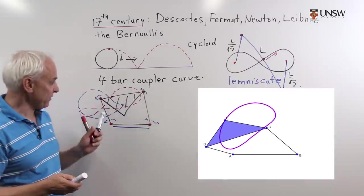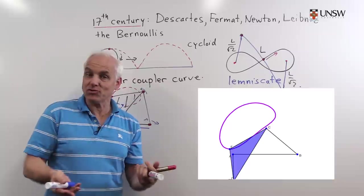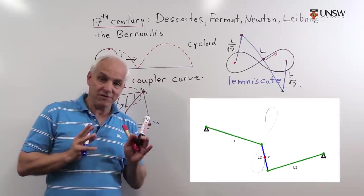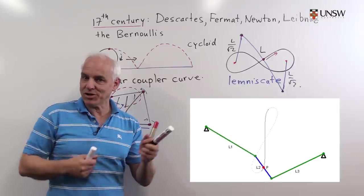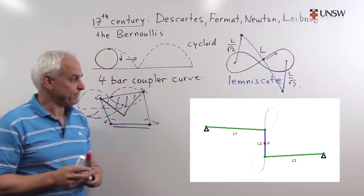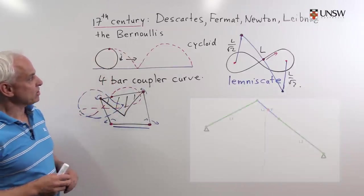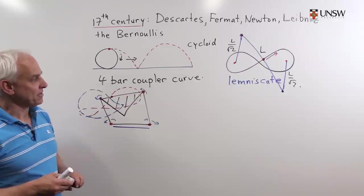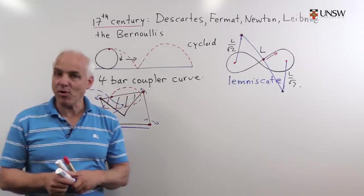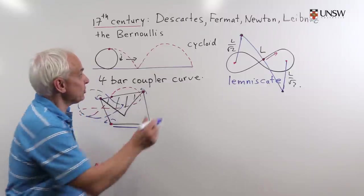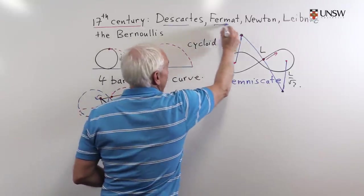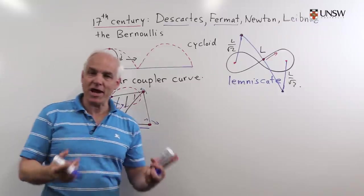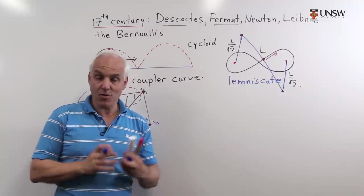So these kinds of things ended up being quite important in industrial applications. For example, James Watt used this kind of device to convert rotary motion to linear motion in his steam engine. So we had interesting mechanical devices, but we also had an important algebraic innovation due to Descartes and Fermat. And that leads to the idea of an algebraic curve, which is a different way of thinking about what a curve is.